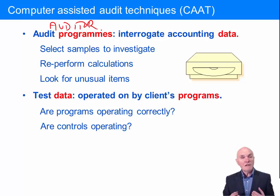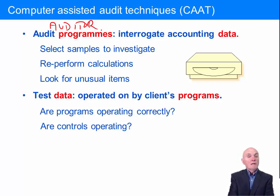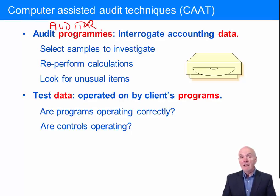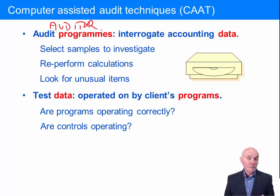Once you can read the data on clients' computer files, then you can do all sorts of interesting manipulation with that data. For example, you can select the samples to investigate. If you remember when we were talking about sampling, ideally you'd like to get random sampling. If you've got 10,000 or 100,000 records on a computer, then it's pretty easy to get your audit programme to select maybe 100 of those records at random, or it would be very easy to get it to stratify.